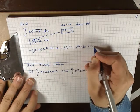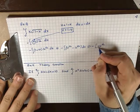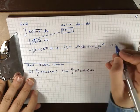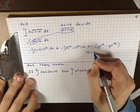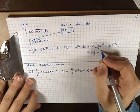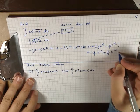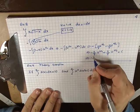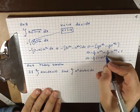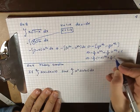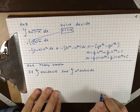Substituting, we get minus the integral of (1 − u)·u^(1/2) du, which expands to minus the integral of u^(1/2) − u^(3/2) du. Integrating term by term: minus [u^(3/2)·(2/3) − u^(5/2)·(2/5)] + C, which gives −(2/3)u^(3/2) + (2/5)u^(5/2) + C. Putting u back in: −(2/3)(1 − x)^(3/2) + (2/5)(1 − x)^(5/2) + C.